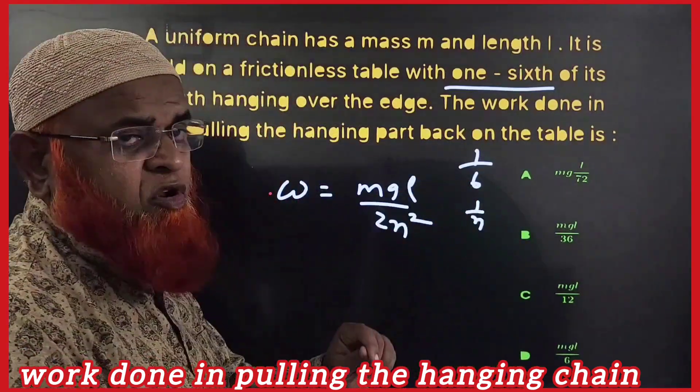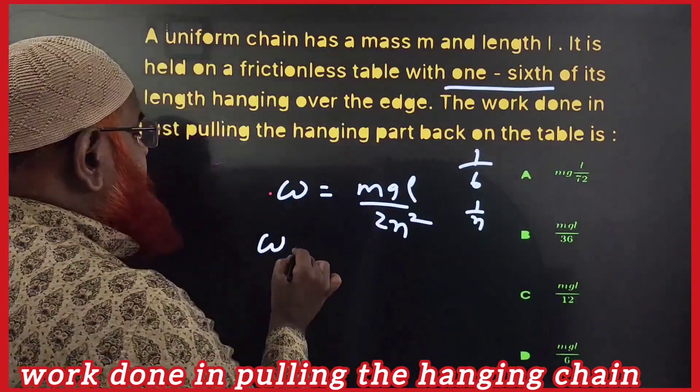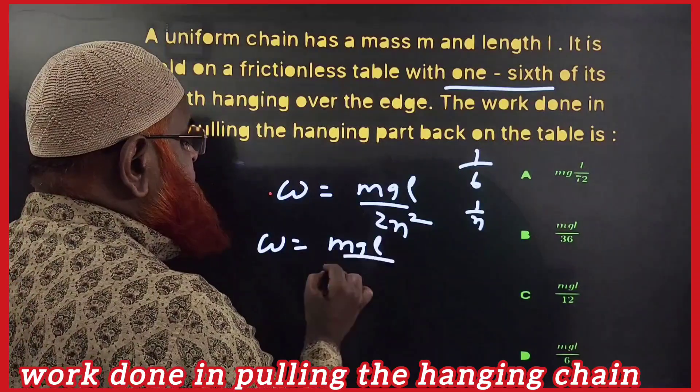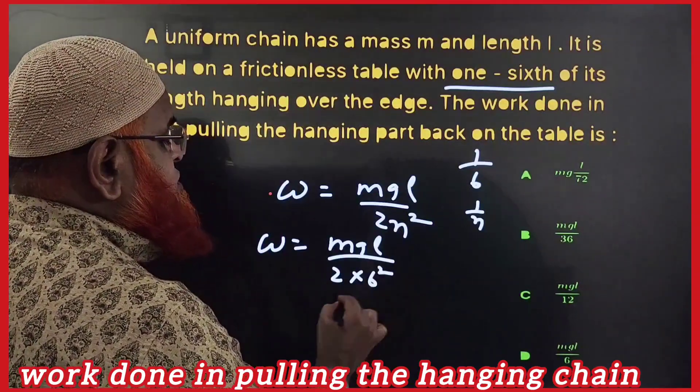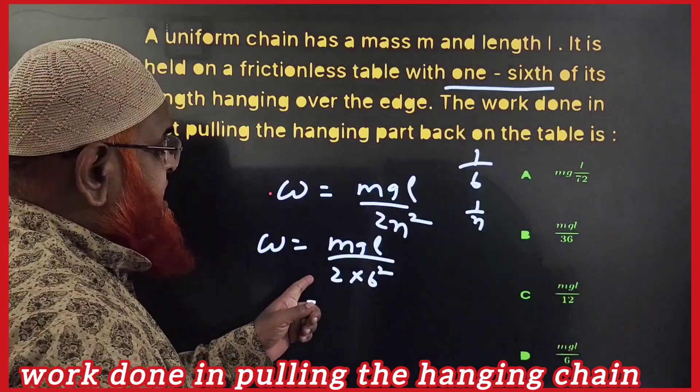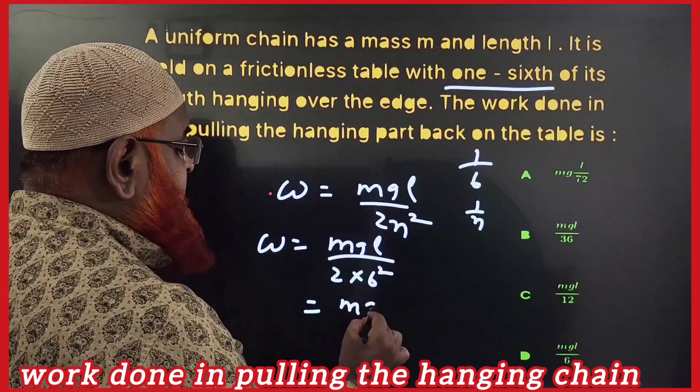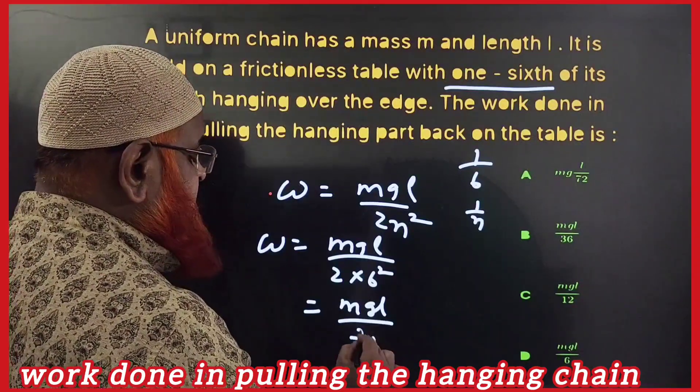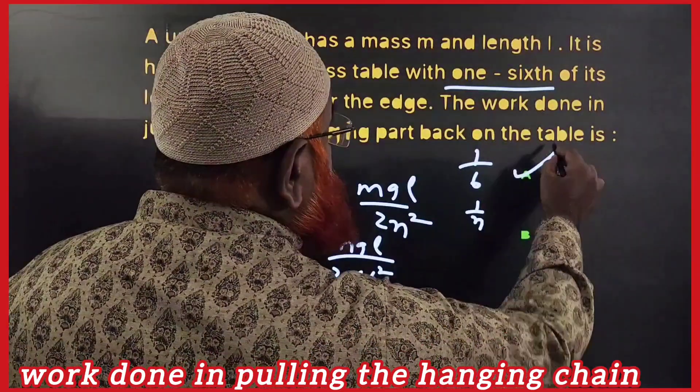So work done can be taken as MGL by 2 into 6 squared - 36 into 2 - that is MGL by 72 is going to be your answer. So the first option.